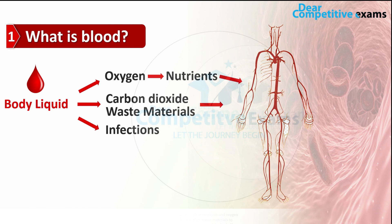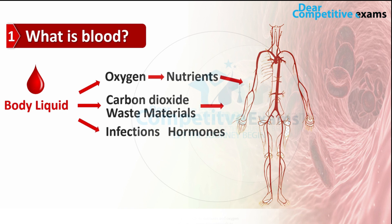Blood also fights with infections and carries hormones around the body. So to summarize, blood is a fluid that gives necessary substances to our body like oxygen and nutrients, and at the same time carries carbon dioxide and waste materials to the lungs, kidneys, and digestive system so they can be removed.